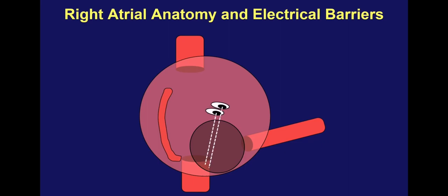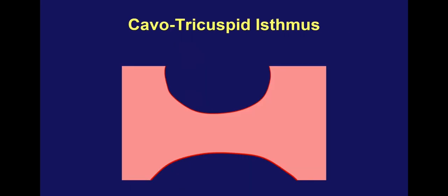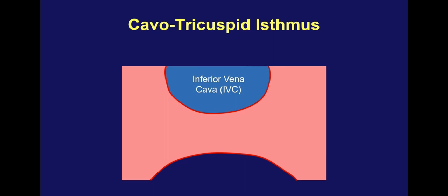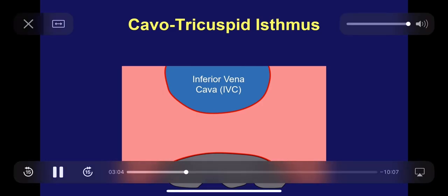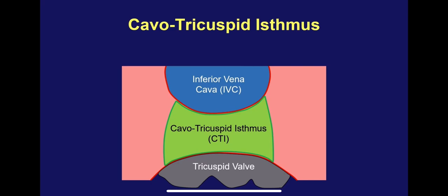Here's what the cavo-tricuspid isthmus looks like if we stare at it looking downward from the middle of the right atrial chamber. Posteriorly, you have the inferior vena cava, which serves as one border. Anteriorly, you have the inferior portion of the tricuspid valve, or the tricuspid annulus. You can therefore see that there's a narrow portion connecting the lateral aspect of the right atrium to the medial aspect and the interatrial septum — an isthmus by definition.